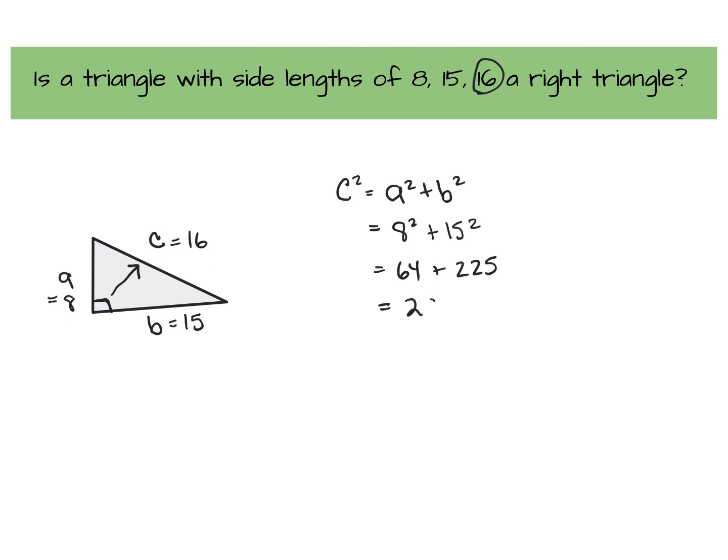Add it together, it gives us 289. Bring down that C squared, square root, square root, which gives us a side length of 17.